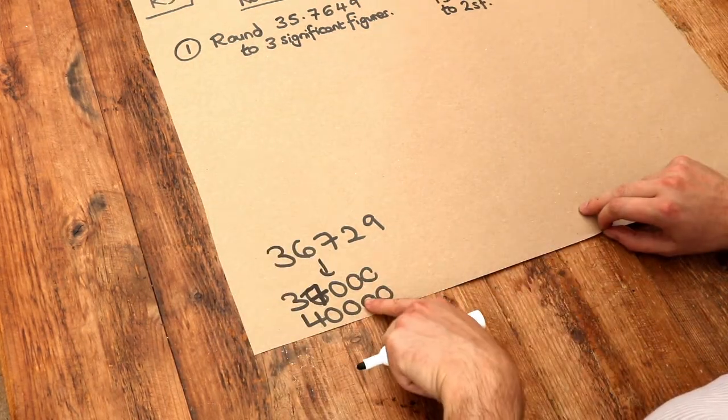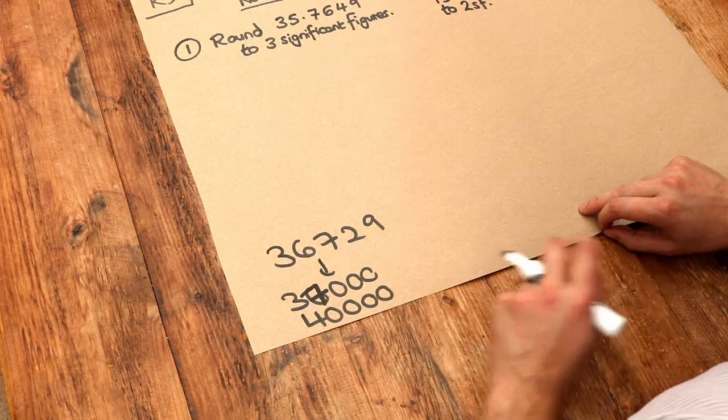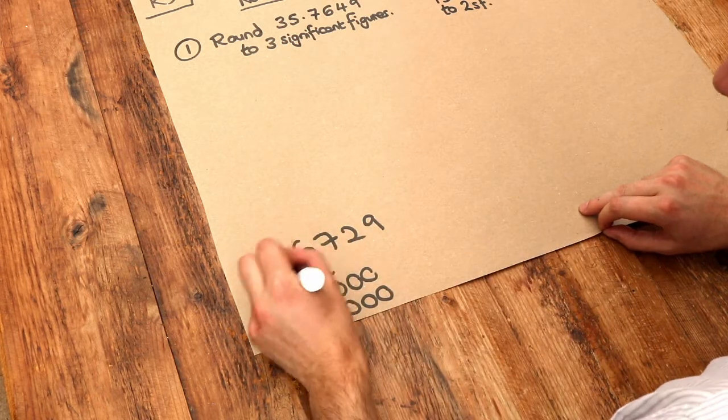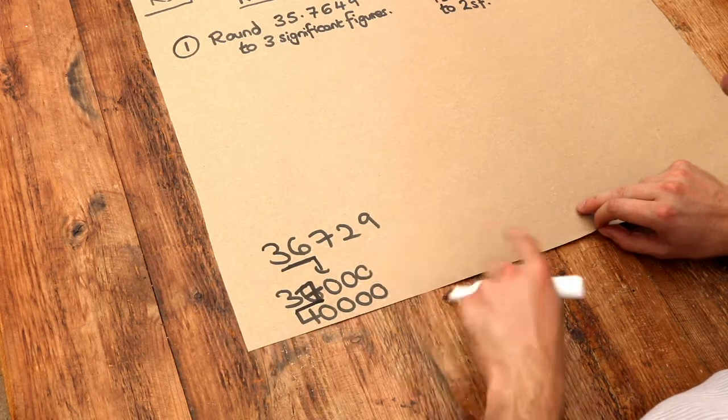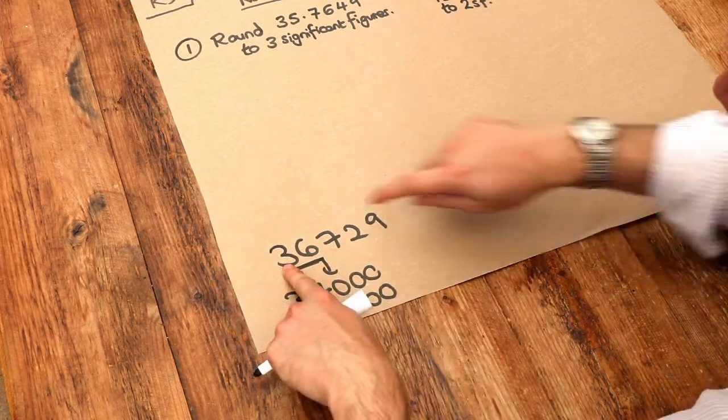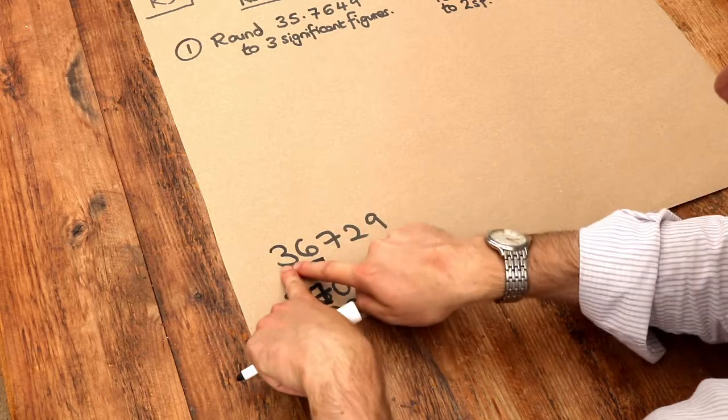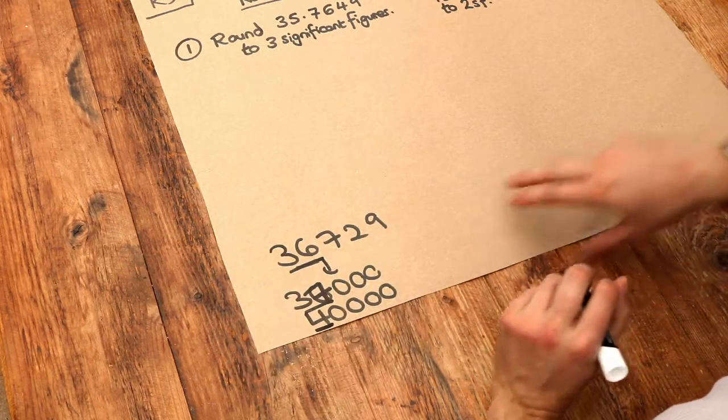Now notice in both these cases, I just kept the first few digits of this number. So in the first case, I kept the first two digits with this appropriately rounding up. Whereas in the first number, I only looked at the first digit and just rounded the rest so we got to the nearest 10,000. So we only kept one digit.